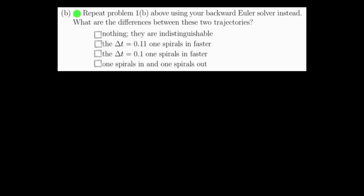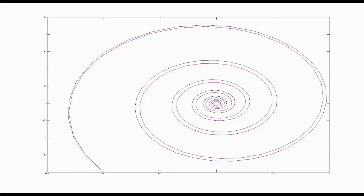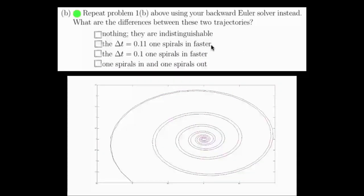Question 2b asks us to repeat problem 1b, but instead using the backward Euler solver we just created. Again, in this plot, the blue trajectory uses a step size of 0.1, and the red trajectory uses a step size of 0.11. As we would expect, the red trajectory, using a larger step size, spirals in faster. So, this is the answer to question 2b. The delta t of 0.11 spirals in faster than using a time step of 0.1.